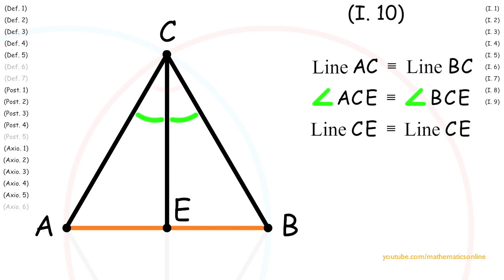Now, since both triangles share a corresponding side, angle, and side, then by Proposition 4, triangle ACE is congruent to triangle BCE.